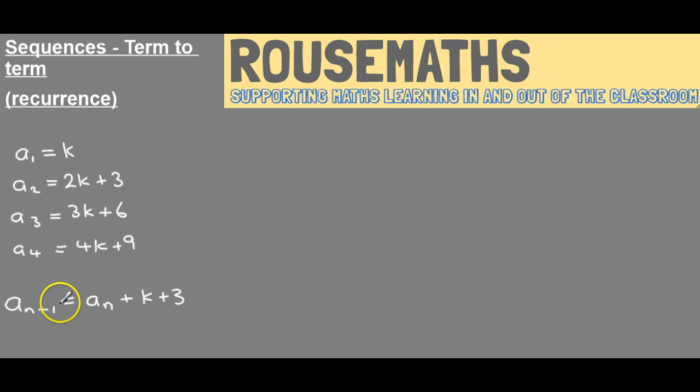So that would be a recurrence relationship. Now the type of question you might be faced with might not give you as much information. So we'll leave that there for the moment. But based on just this information here, the first term and the third term, you can still find out some key information.